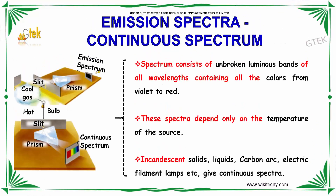Now we will talk about the continuous spectrum. The spectrum consists of unbroken, luminous bands of all wavelengths, containing all the colors from violet to red. These spectra depend only on the temperature of the source. Incandescent solids, liquids, carbon, and electrical filament lamps will give a continuous spectrum.